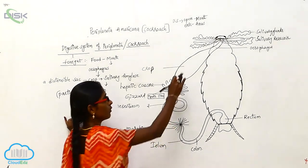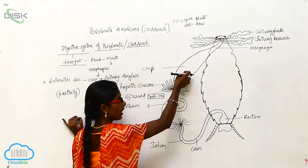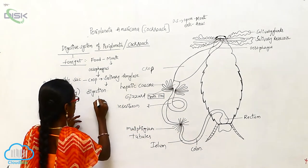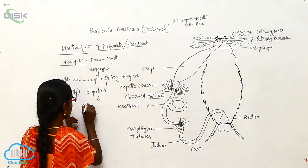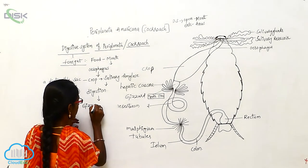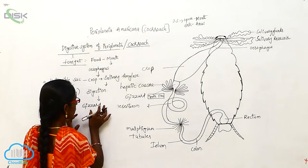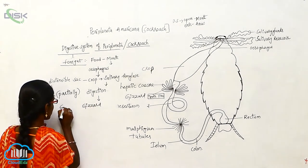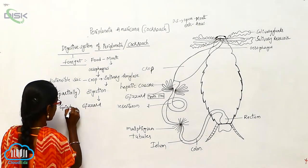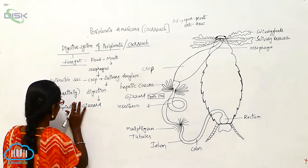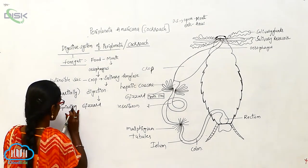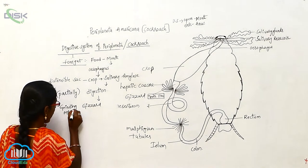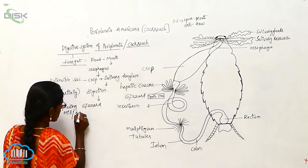After that, from the crop the food material enters into the gizzard. The gizzard acts like a grinding mill and also acts like a sieve.